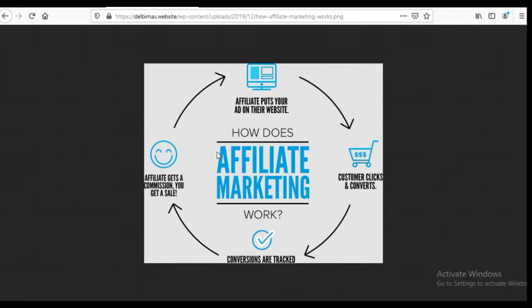What affiliate marketing is all about is there is a platform that brings together product creators who have created a product and people who are ready to market that product. You as an affiliate come as a middleman between the product owner and the persons who need the product. All you do is recommend the product to them, and when they buy it, you get a commission — in most cases ranging from as low as 10 percent.